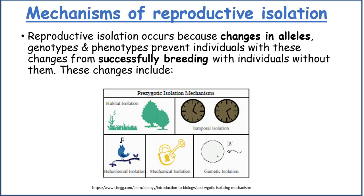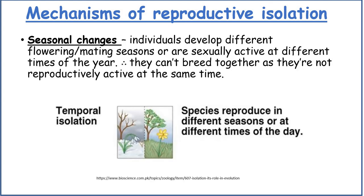Reproductive isolation occurs because changes in alleles, genotypes and phenotypes prevent individuals with these changes from successfully breeding with individuals without them. These changes include temporal isolation, behavioural isolation, and mechanical isolation. Temporal isolation occurs when individuals develop different flowering or mating seasons, or are sexually active at different times of the year, so they can't breed together as there aren't enough reproductively active individuals at the same time.